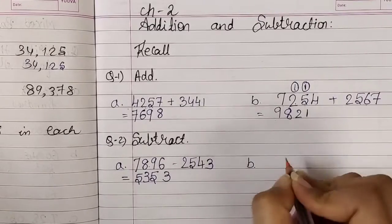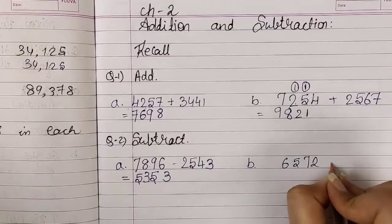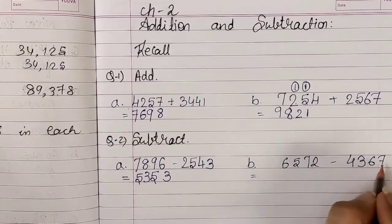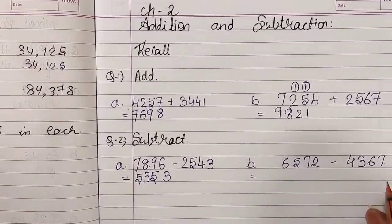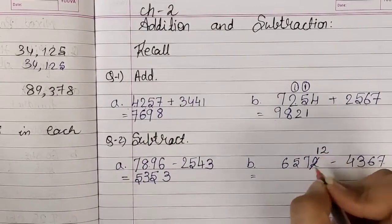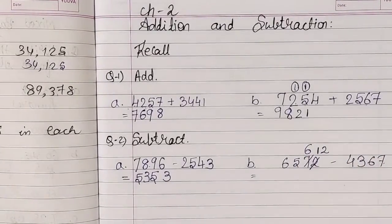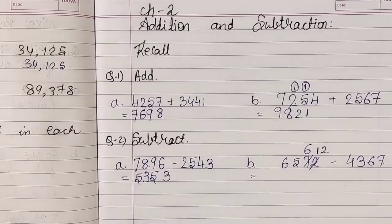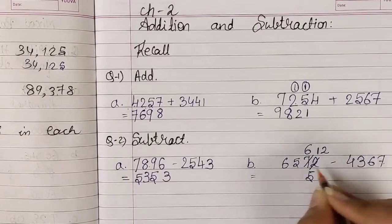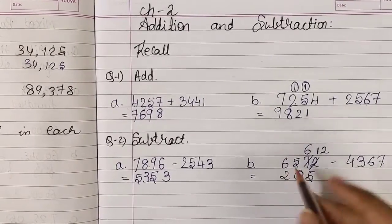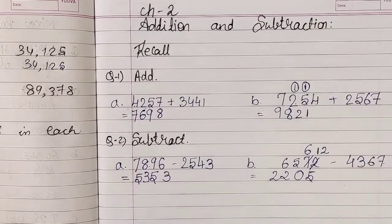Okay. Number B: 6,572 minus 4,367. So students, here it is 2, here it is 7. Is it possible — 2 minus 7? No. We will borrow 10. So it will become 12. हमने 10 borrow किया है. यहाँ पर 7 को cut करके क्या लिखेंगे? 6. Now what is 12 minus 7? Very good. 12 minus 7 is 5. What is 6 minus 6? 0. 5 minus 3? 2. And 6 minus 4? 2. So students, हमारा answer क्या हो गया? 2,205.